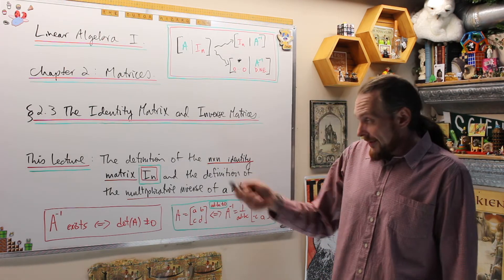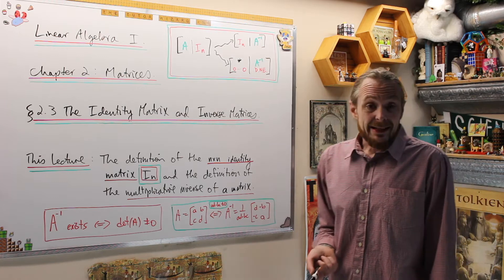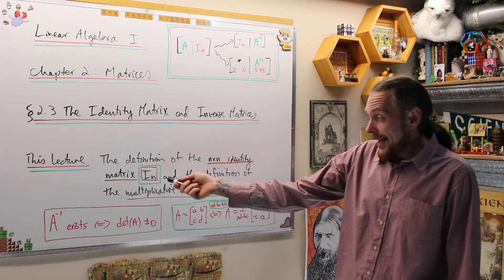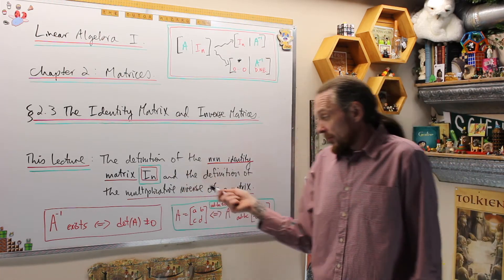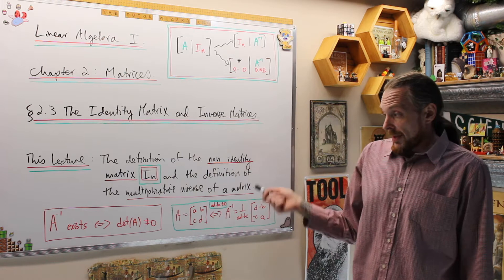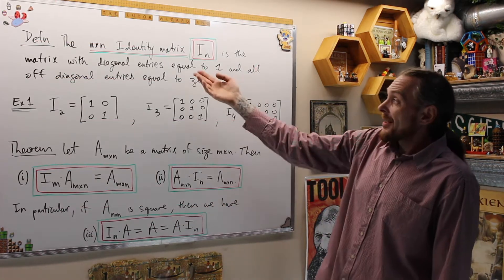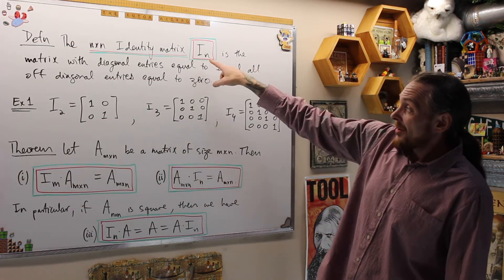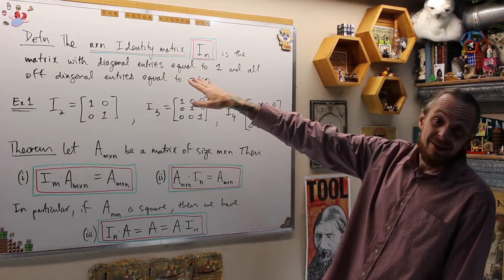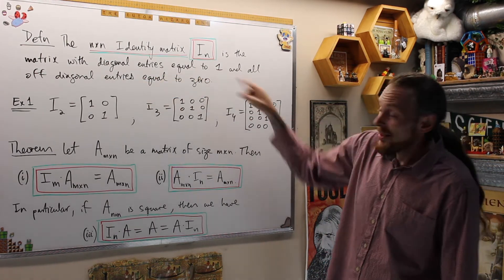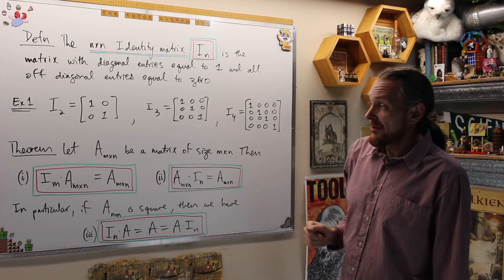This lecture specifically, what we're going to do is give the definition of the n by n identity matrix, I_n, and the definition of the multiplicative inverse of a matrix. The n by n identity matrix denoted I_n is the matrix with all diagonal entries equal to ones, and all of the off diagonal entries are equal to zero.